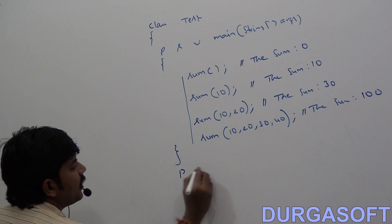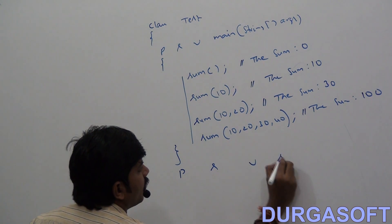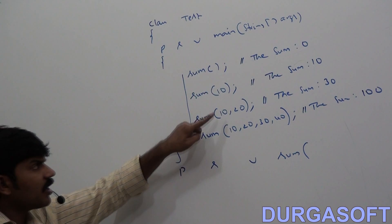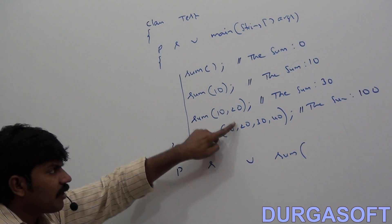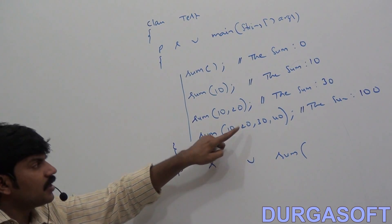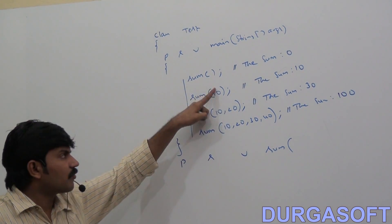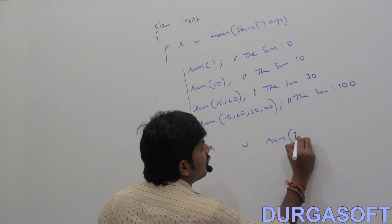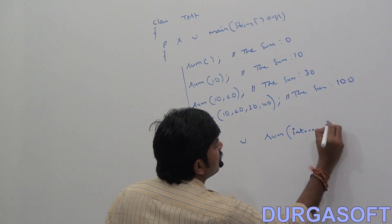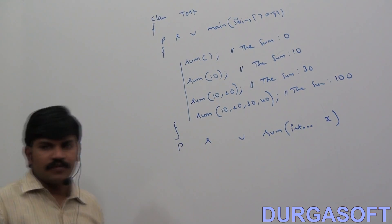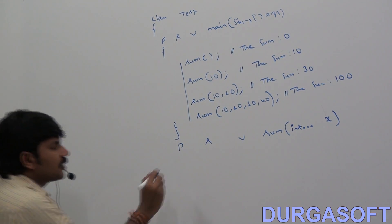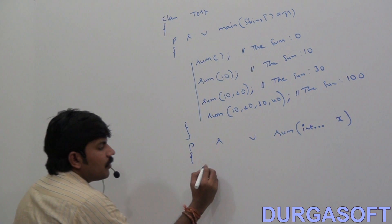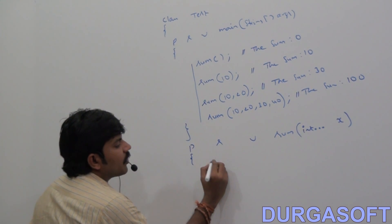Just declare: public static void sum(int... x). Within this method, I'll take a variable 'total'. Using a for-each loop, for every int value present in the array, total = total + x[i]. At last, System.out.println('the sum is ' + total). That's the end of the sum method and the class.